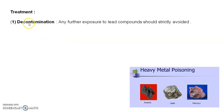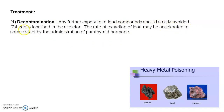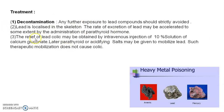The first part of treatment is decontamination — any further exposure to lead compounds should be strictly avoided. Lead localized in the skeleton may have its rate of excretion accelerated by administration of parathyroid hormone, which increases the rate of lead excretion from the bones. Relief of lead colic may be obtained by intravenous injection of a 10% solution of calcium gluconate. Later, parathyroid hormone or acidifying salts may be given to metabolize the lead.